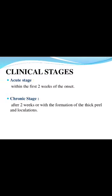Next, clinical stages. There are mainly two types: first is acute stage and second is chronic stage. In the acute stage, within the first two weeks of onset, the patient can heal or recover. But in the chronic stage, the period extends beyond two weeks, with formation of thick peel and loculation, meaning it is a severe and prolonged stage.